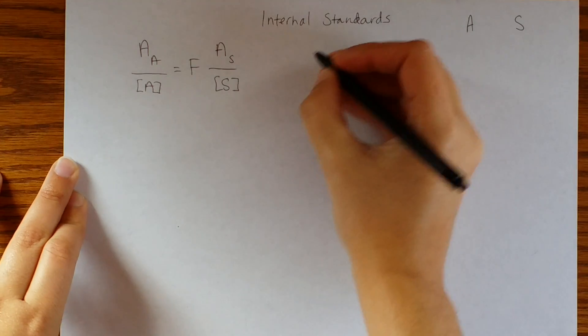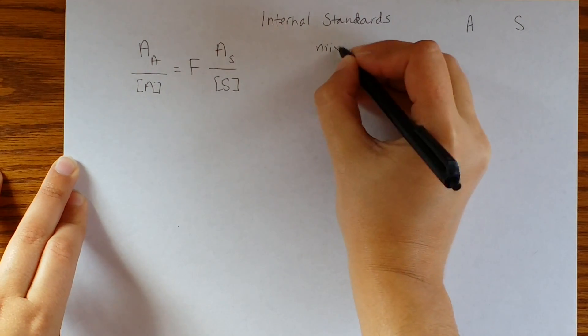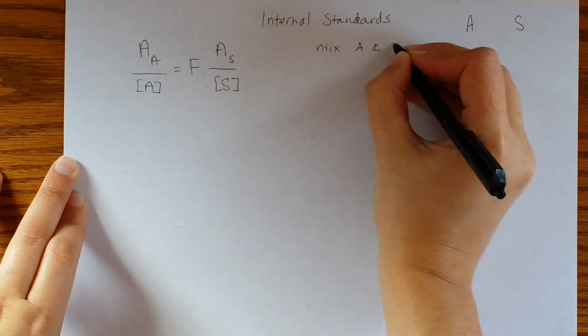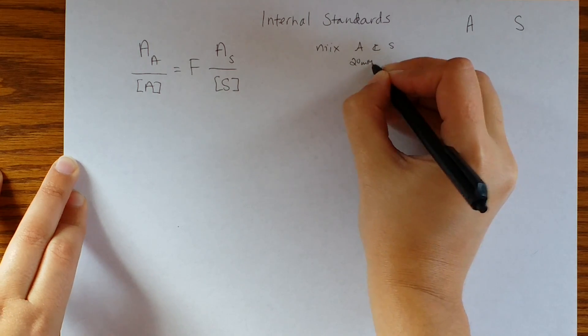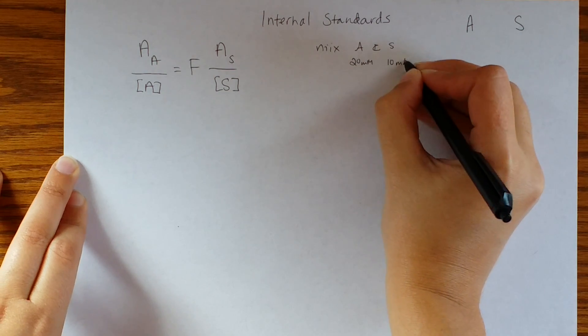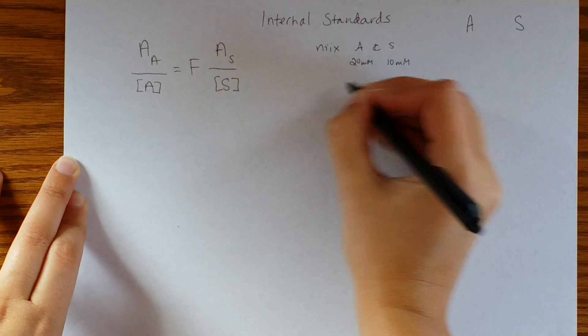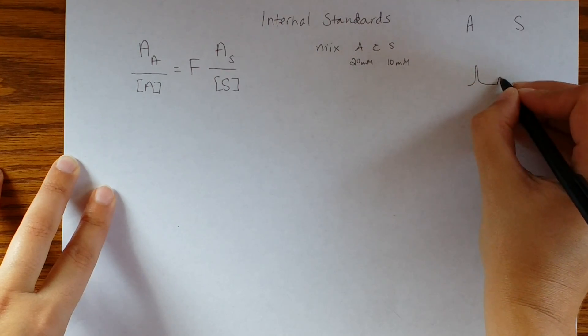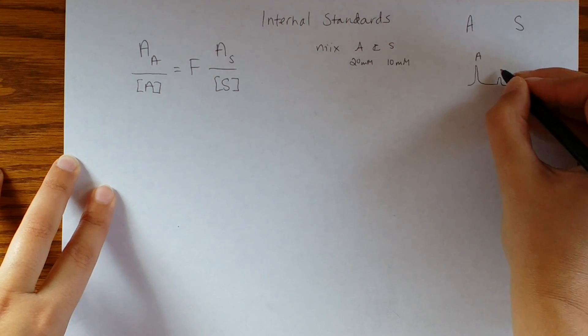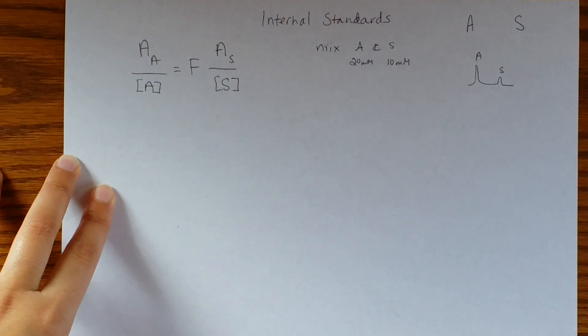Let's say that we mix known amounts of A and S, and it turns out that we've got 20 millimolar of A and 10 millimolar S. Then you're going to measure them, and let's just say this is a chromatography thing, so you have analyte A and standard S, and we have concentrations of both.